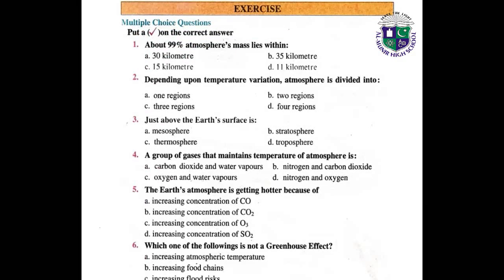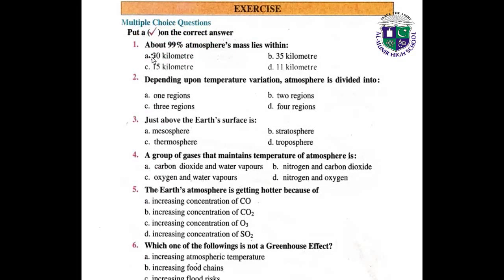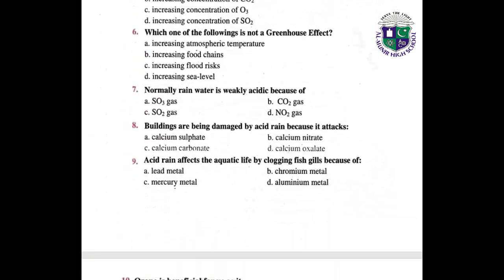Next we have the exercise — multiple choice questions. Question 1: about 99% of atmospheric mass lies within — the correct answer is A: 30 km. Question 2: correct answer is D: 4 regions. Question 3: correct answer is D: troposphere. Question 4: correct answer is A: carbon dioxide and water vapors. Question 5: correct answer is B: increasing concentration of carbon dioxide.